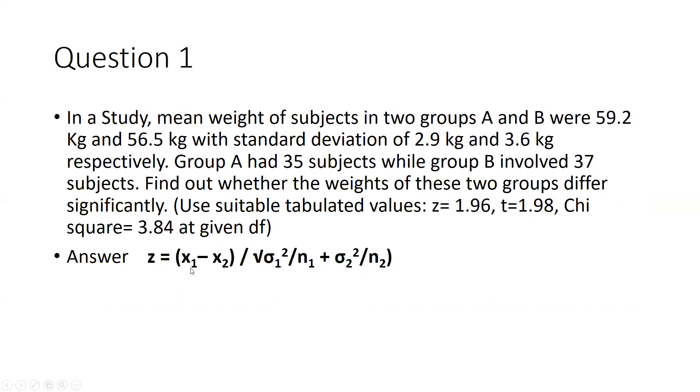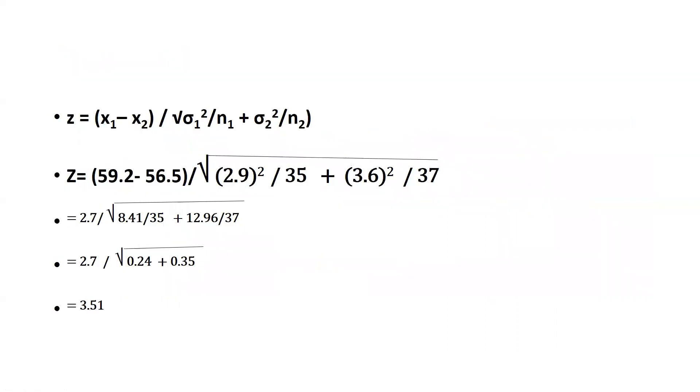What is the formula of z? x̄₁ minus x̄₂ divided by under root: standard deviation sample 1 squared divided by n₁ plus standard deviation sample 2 squared divided by sample size of second sample, n₂. Now we will put all the values.